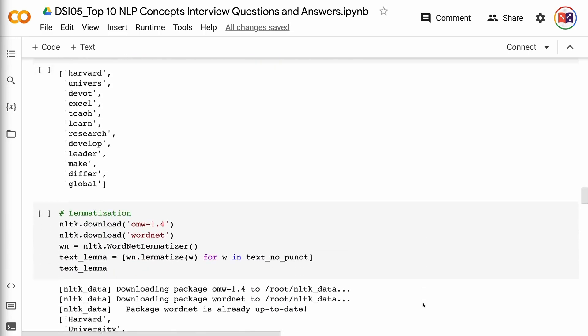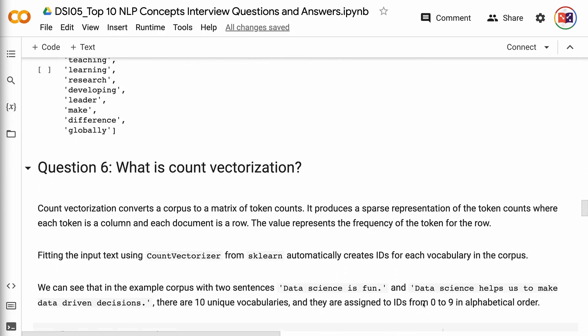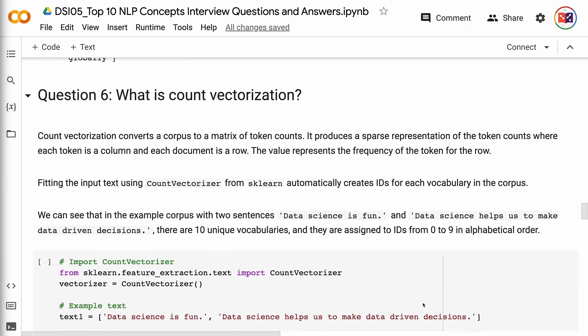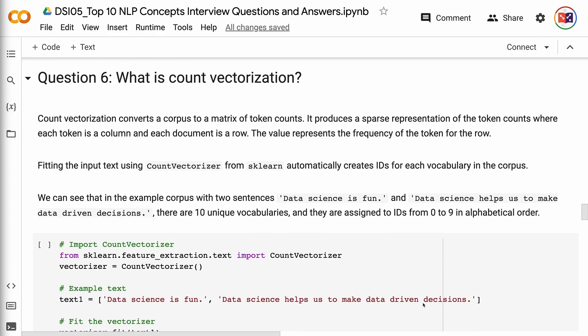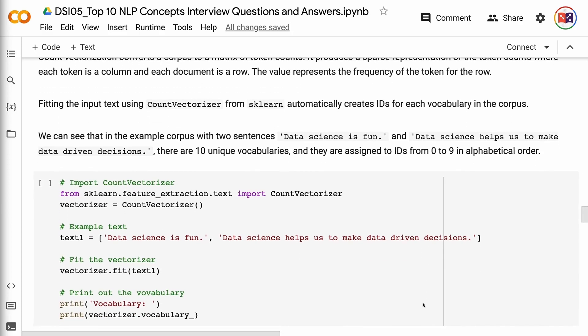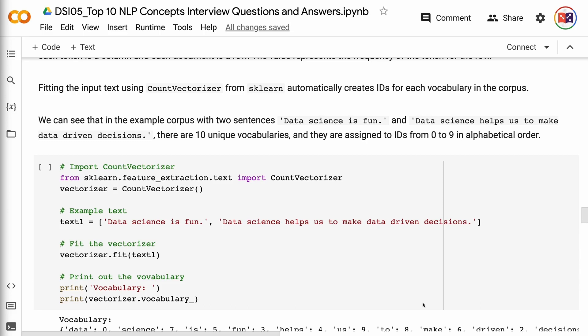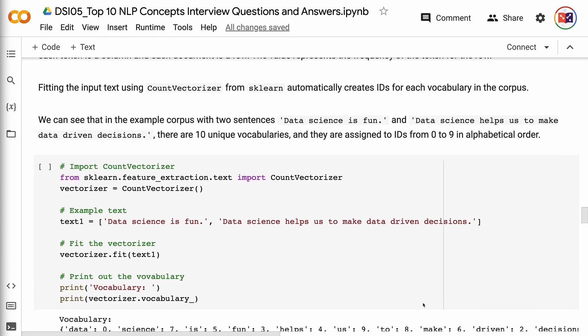Question 6: What is count vectorization? Count vectorization converts a corpus to a matrix of token counts. It produces a sparse representation of the token counts where each token is a column and each document is a row. The value represents the frequency of the token for the row. Fitting the input text using CountVectorizer from scikit-learn automatically creates IDs for each vocabulary in the corpus. We can see that in the example corpus with two sentences, data science is fun and data science helps us to make data-driven decisions, there are 10 unique vocabularies, and they are assigned to IDs from 0 to 9 in alphabetical order.